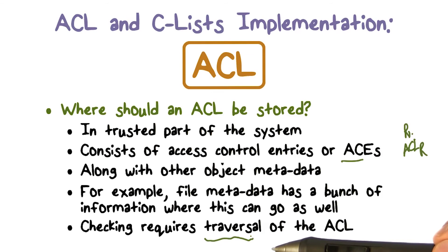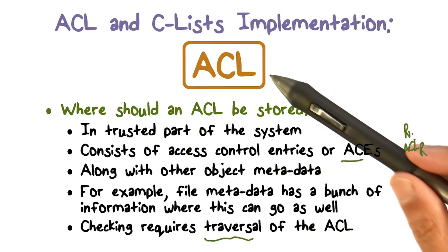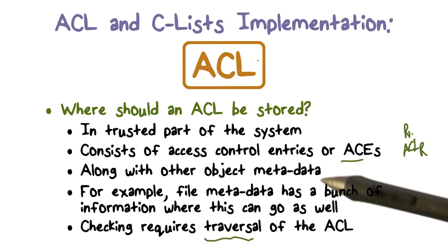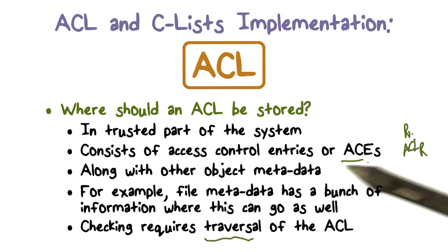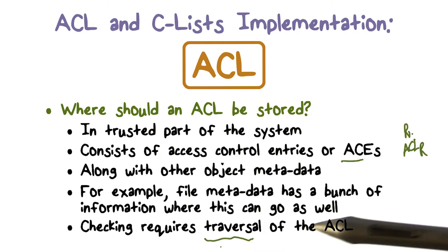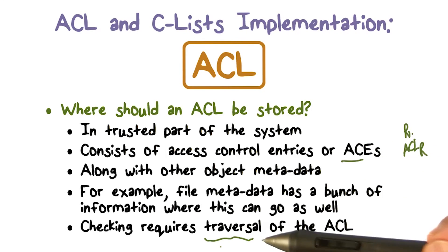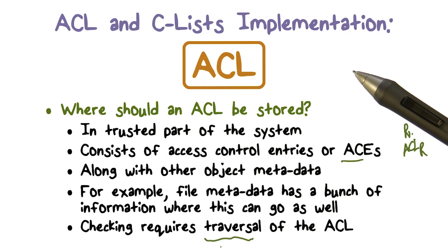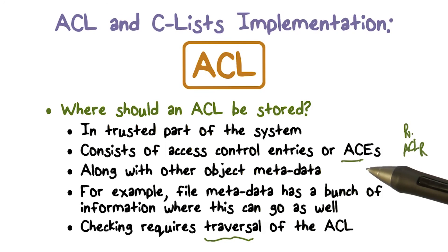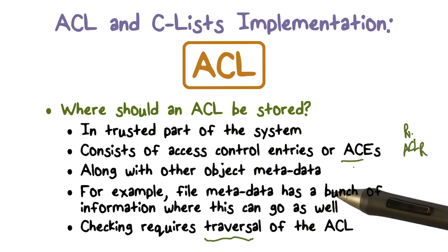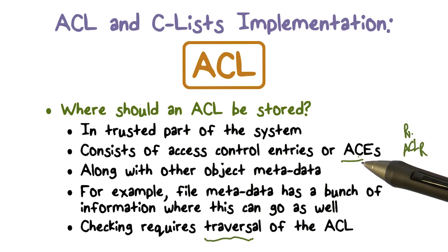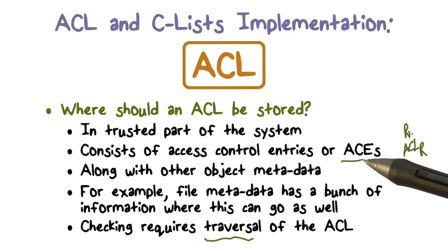So traversal basically means that when a request comes from a given user, we go down the list to see if an ACE exists for the source of the request, and if it does, whether it includes permissions consistent with the nature of the request. If that's the case, we can grant access. If we can't find such an ACE, or the access right doesn't exist — for example, there is an ACE that says you can read, but the request is for write — then we deny it. So now we understand how ACLs can be used.